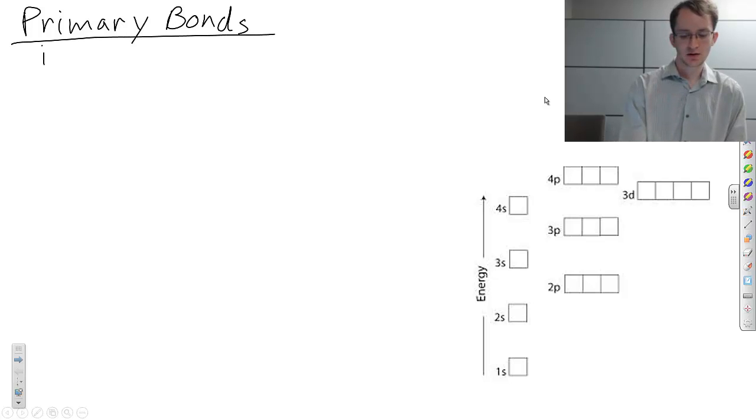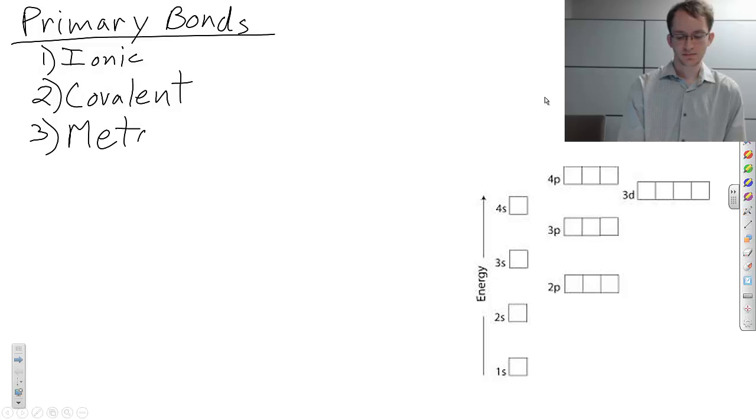There's ionic, there's covalent, and there is metallic. Each of these different types of bonds are created by the way the electrons are associated with individual atoms.